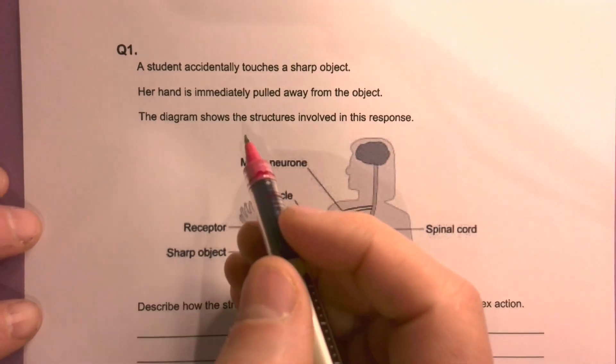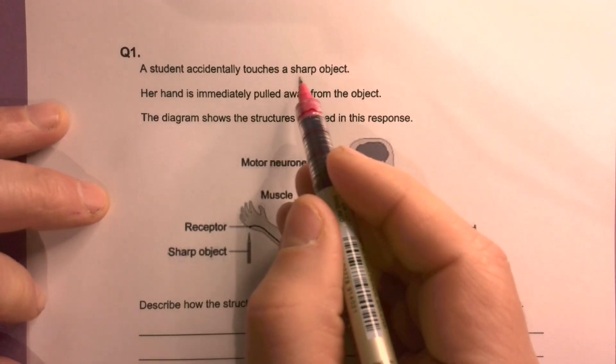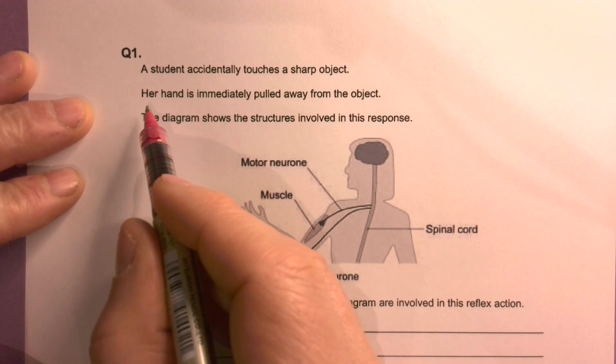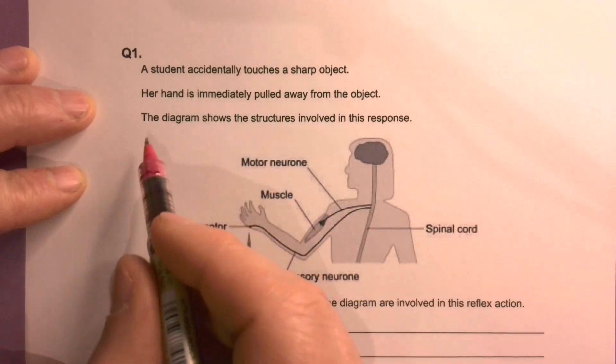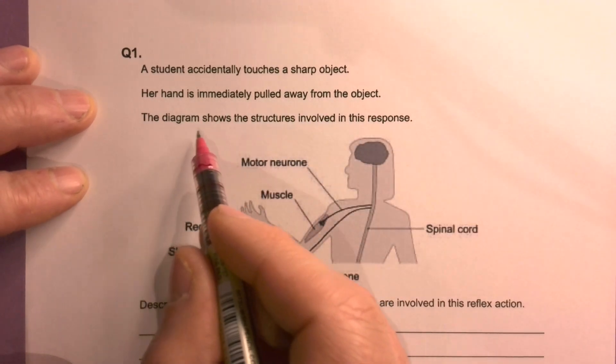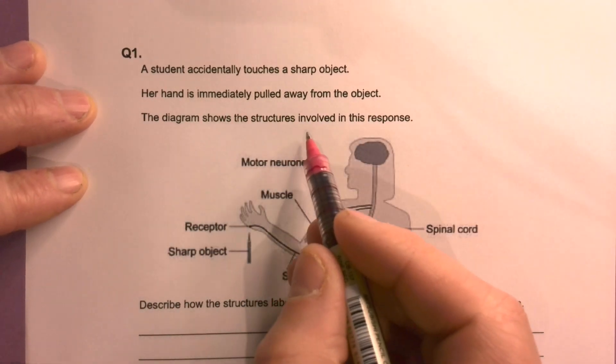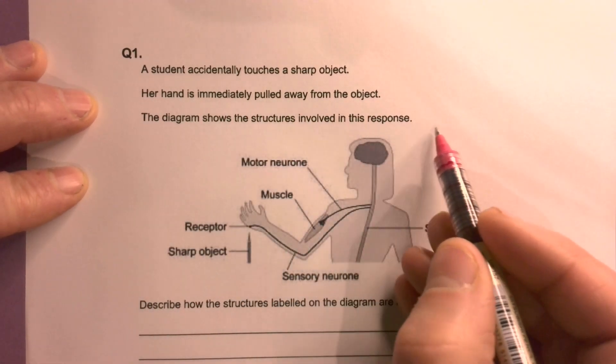A student accidentally touches a sharp object, and her hand is immediately pulled away from the object. The diagram shows the structures involved in this response.